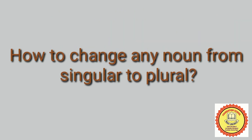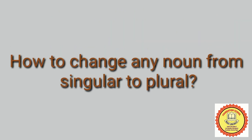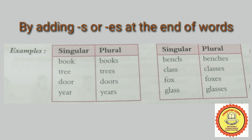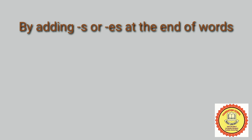Now we will talk about how to change any noun from singular to plural — kisi bhi vastu ko ek vachan se bahu vachan mein kaise badaltate hain. The first rule is: you add S or ES at the end of words. For example: book becomes books, door becomes doors, fox becomes foxes, and many more.